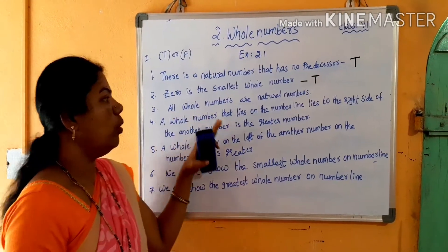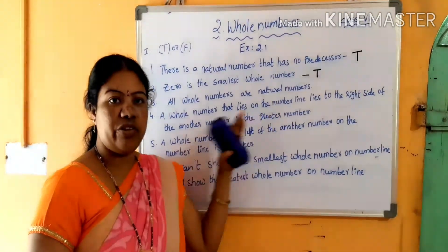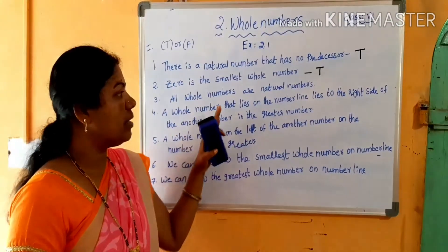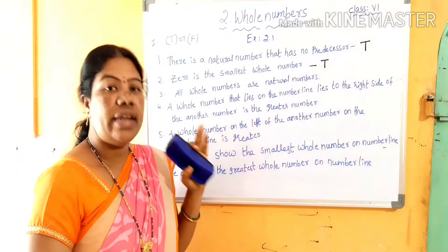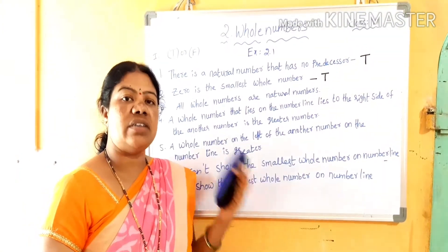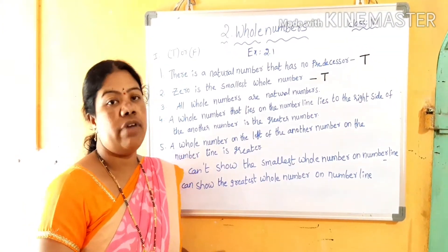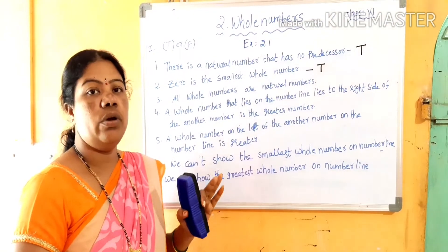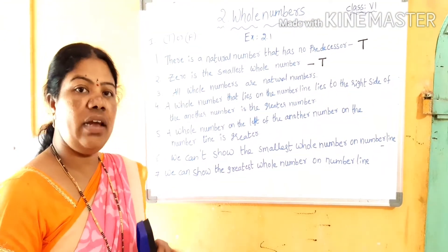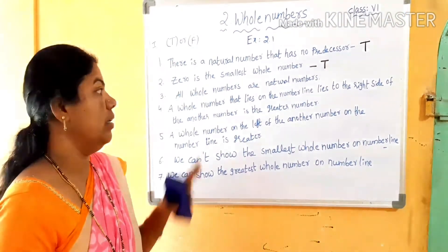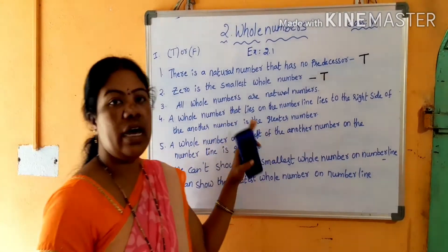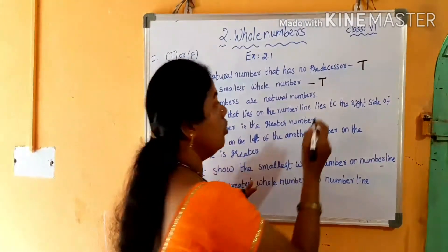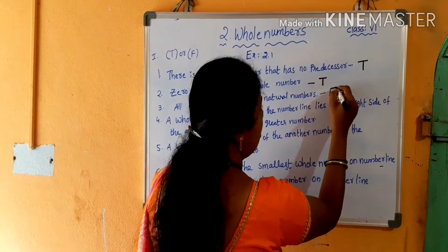Next: all whole numbers are natural numbers. Is it true? No. Natural numbers start from 1, but whole numbers start from 0. So 0 is not present in natural numbers. Therefore all whole numbers are not natural numbers — this statement is false.